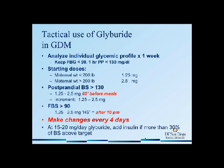At UCSD, we use glyburide in a targeted manner to treat postprandial as well as fasting glucose values. We initiate patients on glyburide based on the patient's weight: if they weigh less than 200 pounds, I usually start at 1.25 milligrams; if they weigh greater than 200 pounds, I start at 2.5 milligrams. I instruct the patient to take glyburide about an hour before her meals, starting anywhere from 1.25 to 2.5 milligrams, and increase by 1.25 to 2.5 milligram increments to a max of 10 milligrams per meal.